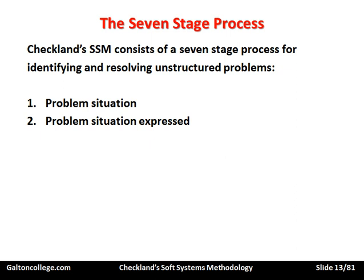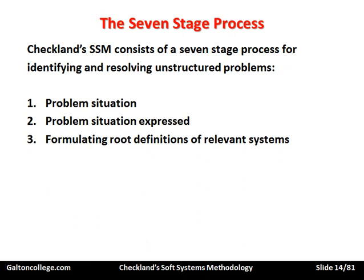Second, we need to express the problem situation — conceptualise it, think about it, write it down, and understand what the problem is. We've identified the problem; now we need to express it and work out precisely what are the issues involved. We need to look at the root definitions of relevant systems — go back and understand any parts of the system. Even though it's fuzzy and messy, we try to figure out what we do know about it, and look at individual parts to understand them. We've got some insight into the overall system if we can understand the subsystems.